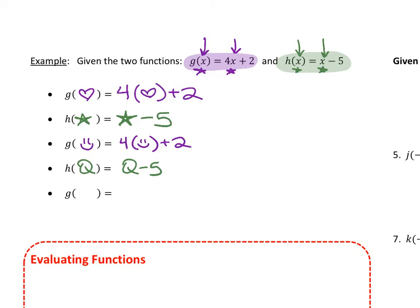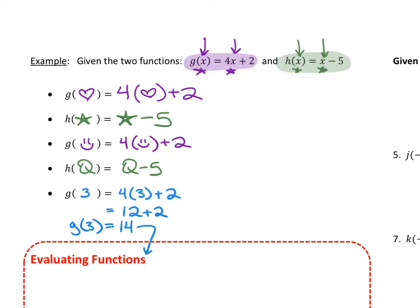The cool part is when we plug in a number — like g of 3. When I replace x with 3, it's going to be 4(3) plus 2. Now all I have is numbers with no more variables or weird shapes and symbols, so I can actually evaluate and calculate the function. Using PEMDAS, 4 times 3 is 12, and 12 plus 2 is 14. So g of 3 is 14. I have just done an evaluating functions problem.